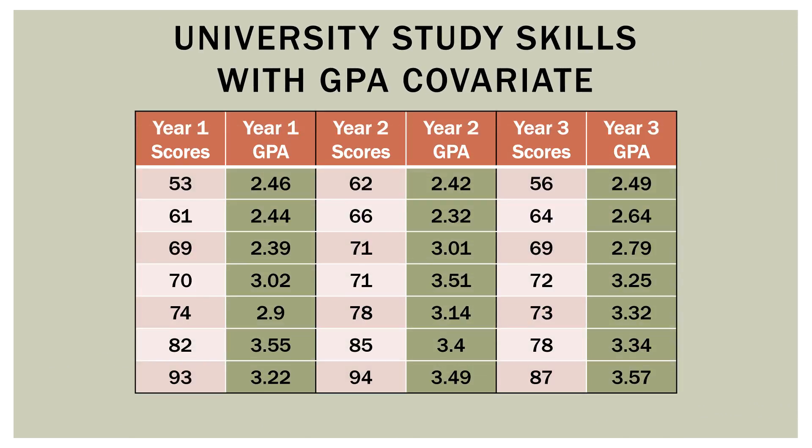Here is our data from the first video. What we have are the study skill scores for first year, second year, and third year college students — year one scores, year two scores, and year three scores. These are our levels and our independent variable, and we are curious whether or not there's a difference among them, like a typical one-way ANOVA. We also have those students' GPAs, which is our covariate. We'll run a regular one-way ANOVA using the year one, year two, and year three scores, then use the GPA as a covariate and see what that does to our output — running it both ways, with and without the covariate of GPA.